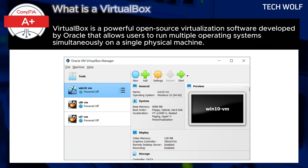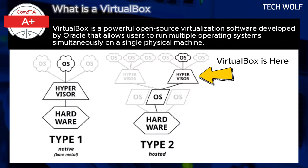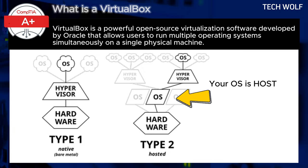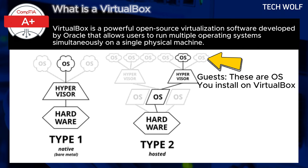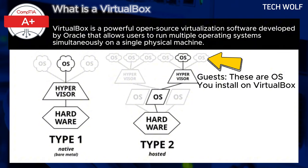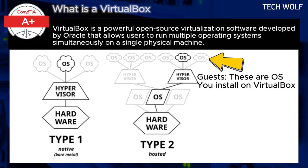VirtualBox is a type 2 hypervisor that runs on top of an existing operating system, known as the host, and provides a platform for installing and running additional operating systems, known as guests, within virtual machines. It supports various guest operating system types including Windows, Linux, macOS, Solaris, and BSD variants, and it can run on different host platforms such as Windows, macOS, and Linux.